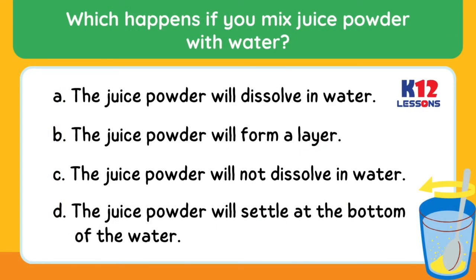Choose the letter of the best answer. Which happens if you mix juice powder with water? A. The juice powder will dissolve in water. B. The juice powder will form a layer. C. The juice powder will not dissolve in water. D. The juice powder will settle at the bottom of the water.